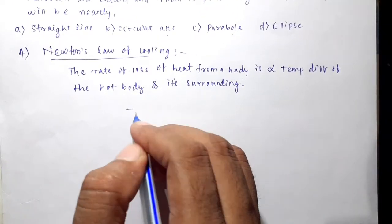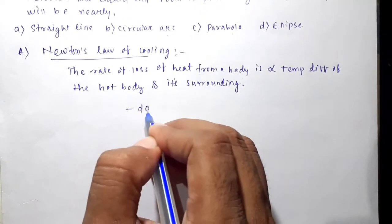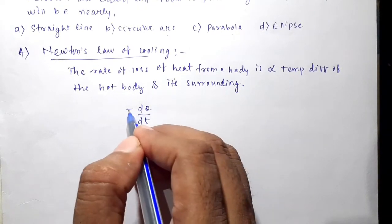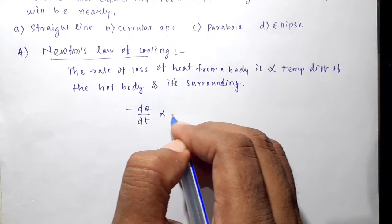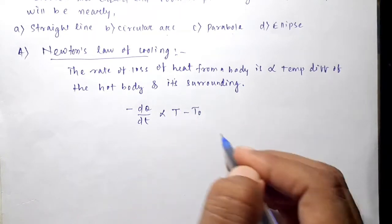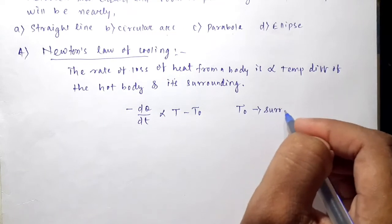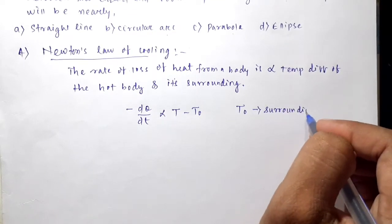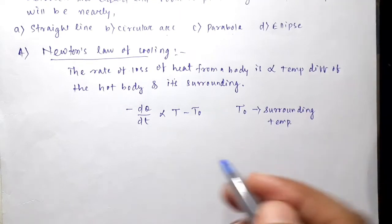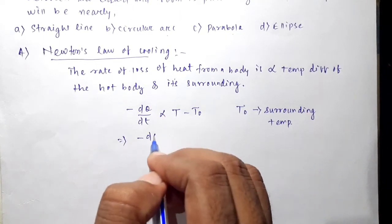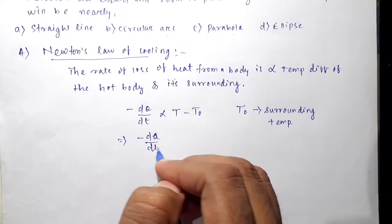Simply, we can write the equation as minus dQ/dt is proportional to T minus T0. I've given the minus sign because there is energy loss. Where T0 is the surrounding temperature and T is the body temperature.